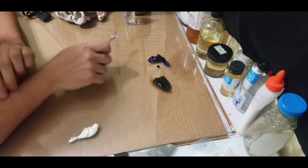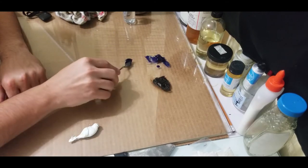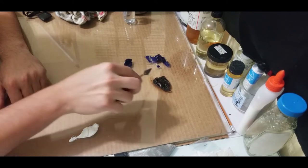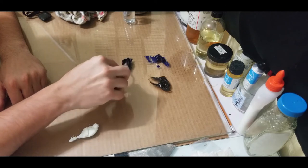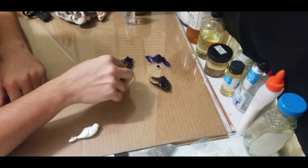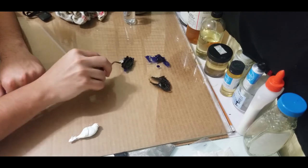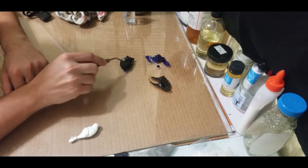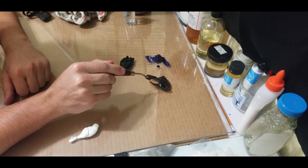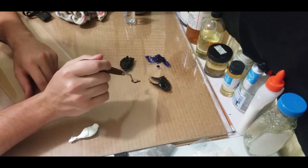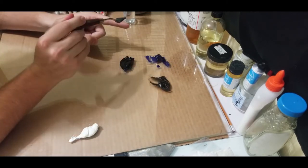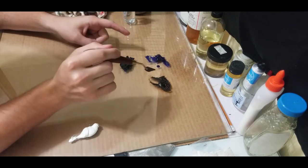So you take blue, proportionally more blue than brown, and you're going to mix it together. There's a cancellation effect going on. Brown is really just a very dark orange, and orange on a color wheel is the opposite of blue.